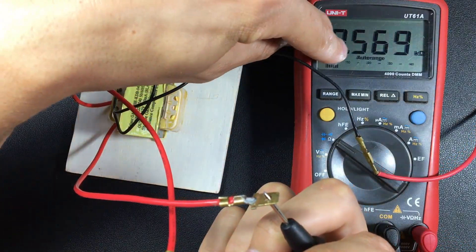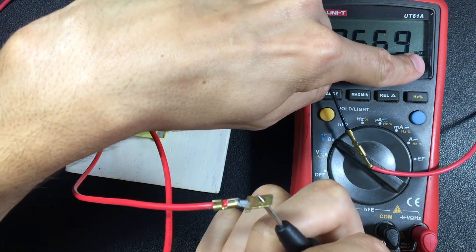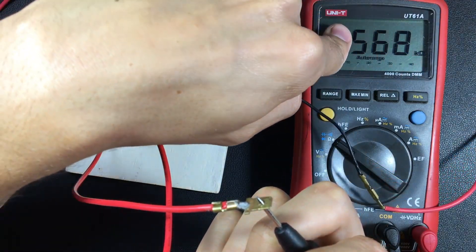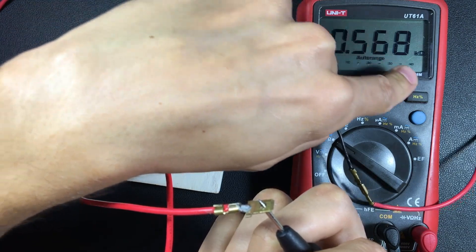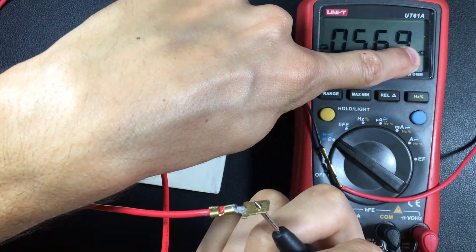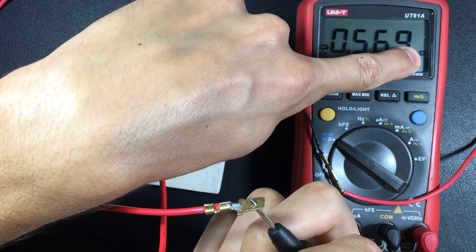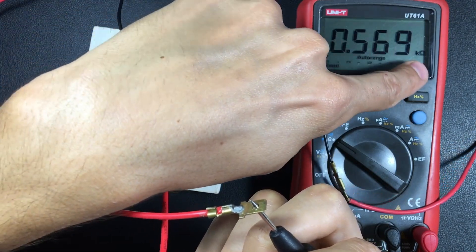This is an auto-ranging multimeter. So 0.569 kilohms. We actually take out the comma, we take out the K which means multiply by a thousand, and then we have 569 ohms.